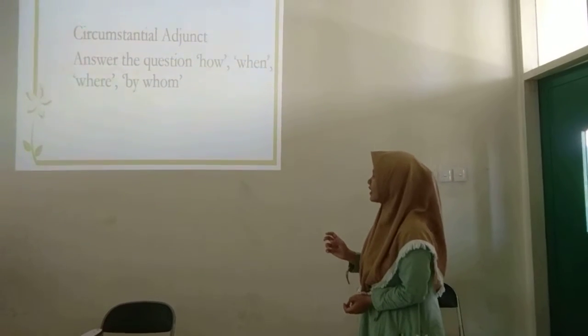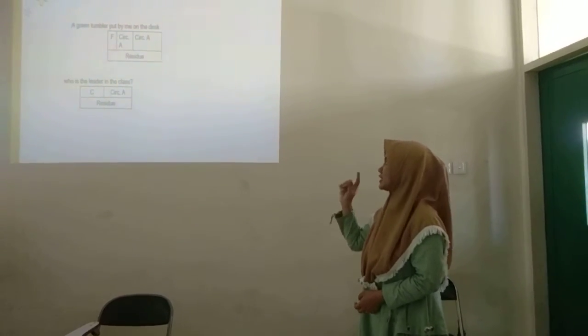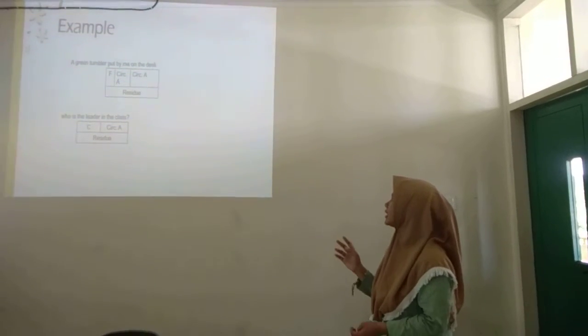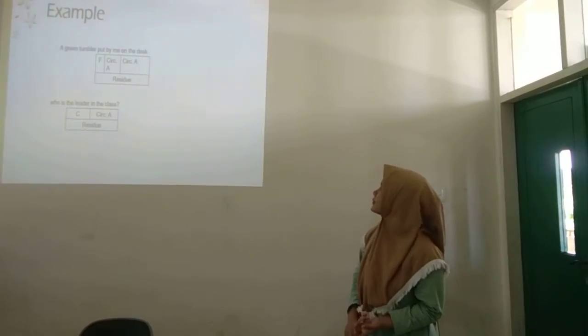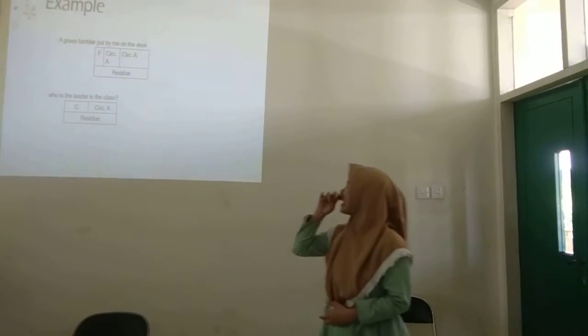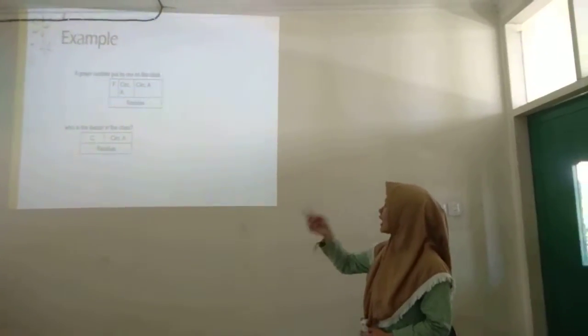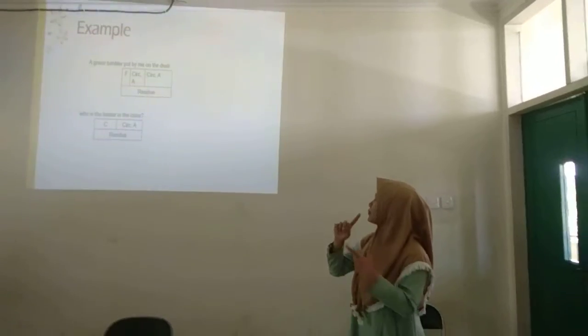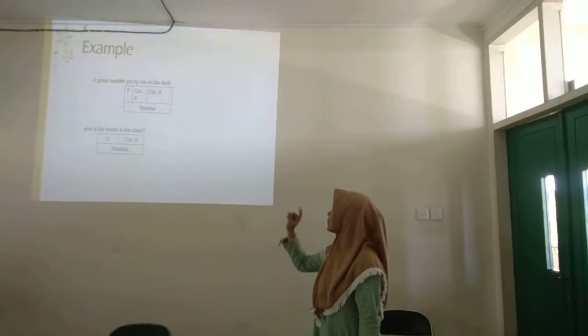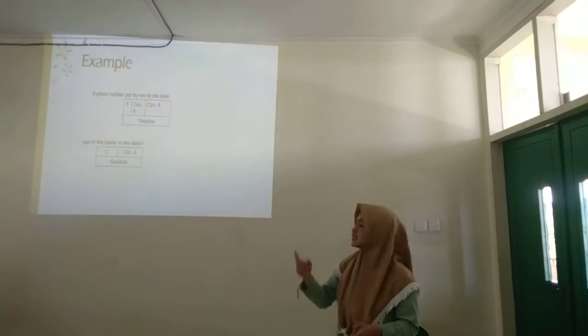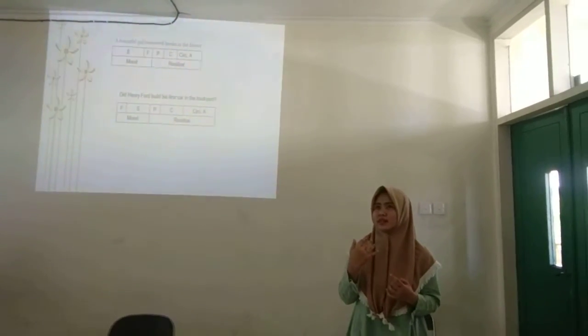For example, a green tumbler put by me on the desk. So, we are looking for the predicator, adjunct or complement. And in the first clause, there is predicator, circumstantial adjunct, and also circumstantial adjunct. And the predicator, in the first clause, so by me is answer by whom from adjunct, and on the desk answer where.